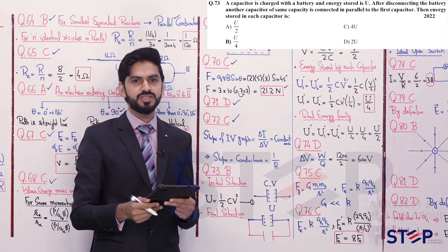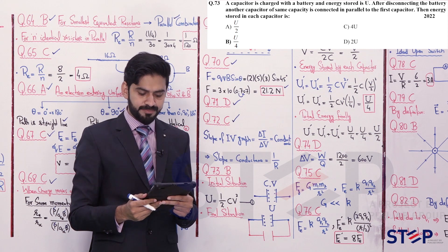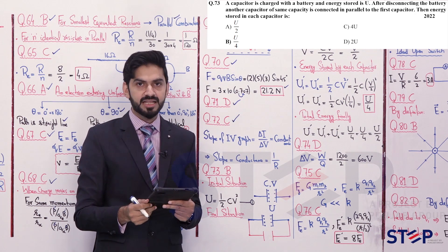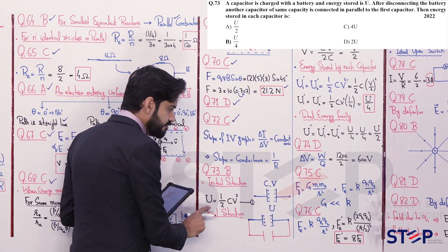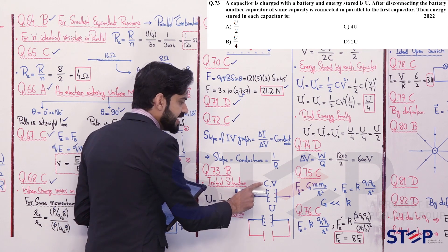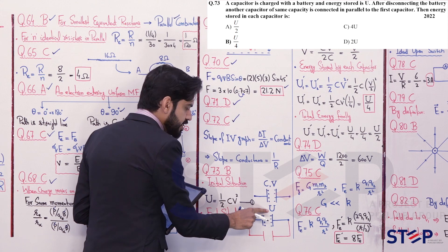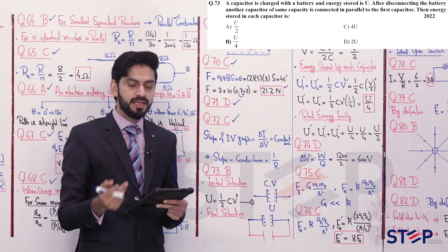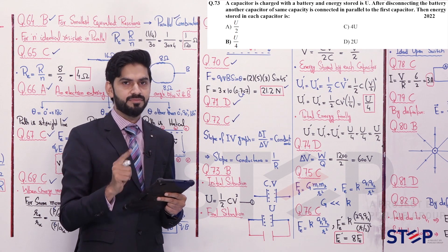Question 73 — also appeared in MDCAT 2022: A capacitor is charged with a battery and energy stored is U. Then the battery is disconnected. Let capacitance = C and charging voltage = V. Energy stored: U = ½CV² (equation 1). After disconnecting the battery, another identical uncharged capacitor (capacitance C) is connected in parallel to the first.